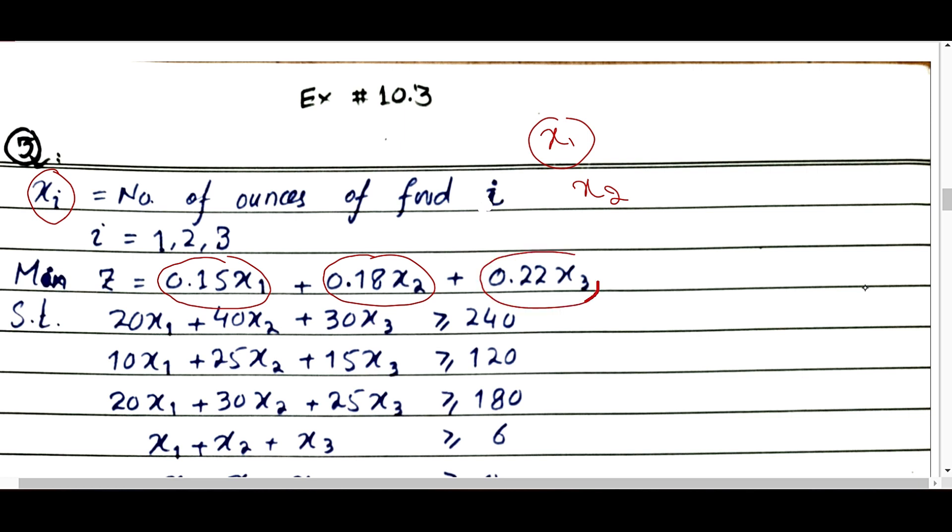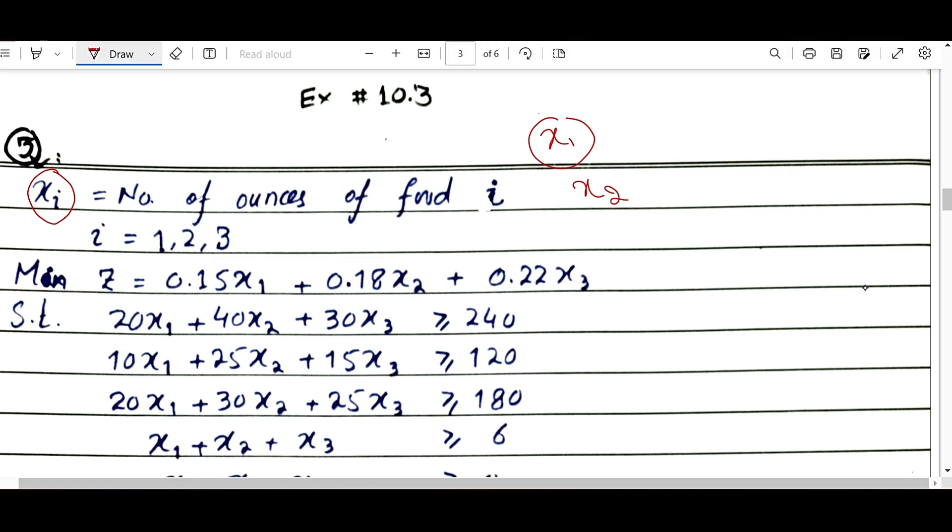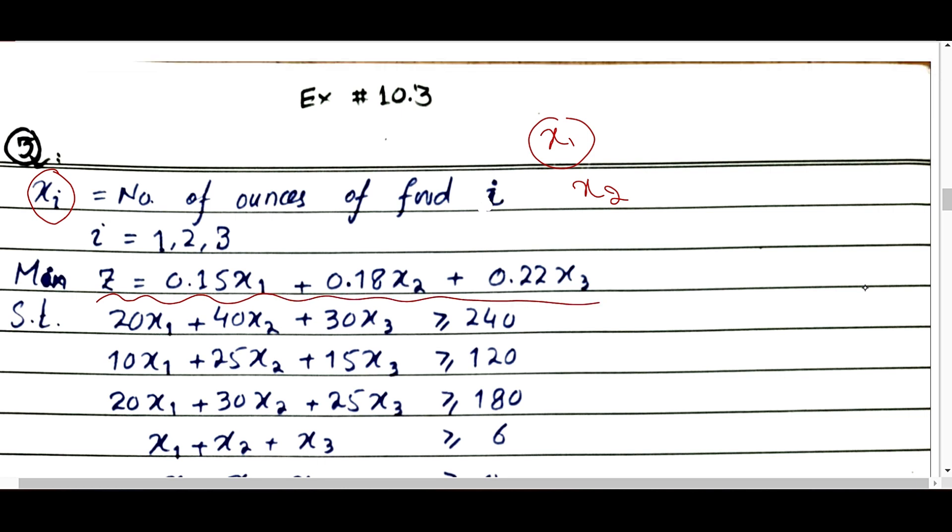Food three costs 0.22 per ounce, so if we take x3 ounces of food three, the cost will be 0.22 x3. When we add all of these together, we get the total cost, which we need to minimize.